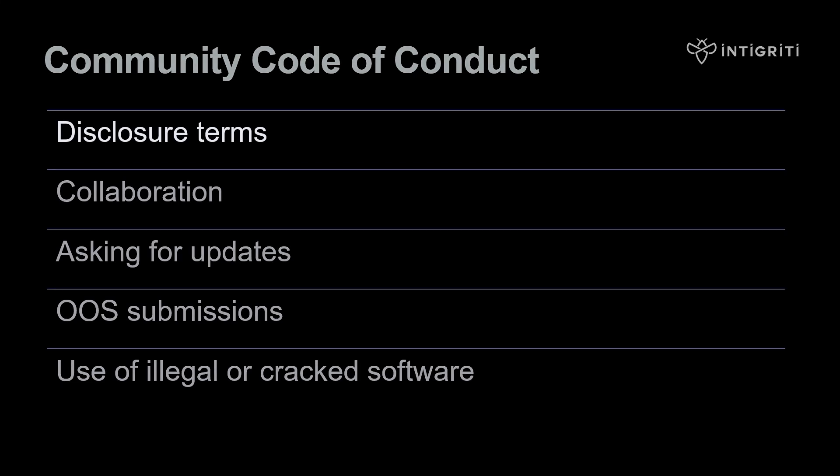Starting with disclosure terms: approval is required to disclose submissions to parties other than Integrity and the concerned company. Disclosure of any submission-related information without written approval is prohibited. Integrity supports research and collaboration on some programs, but you must refrain from sharing confidential information outside of the program, and collaboration with external individuals requires company approval.